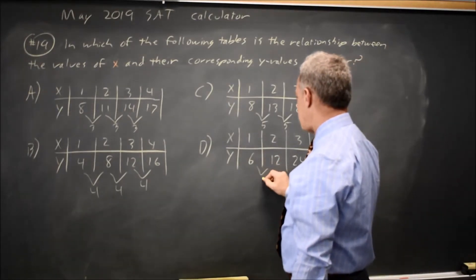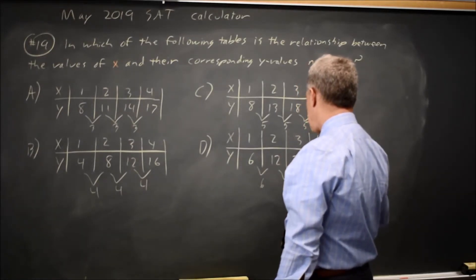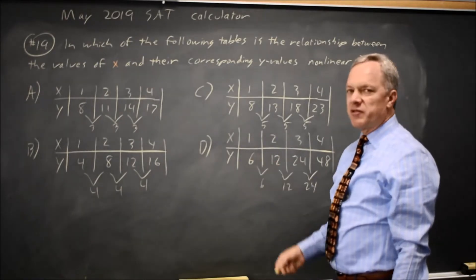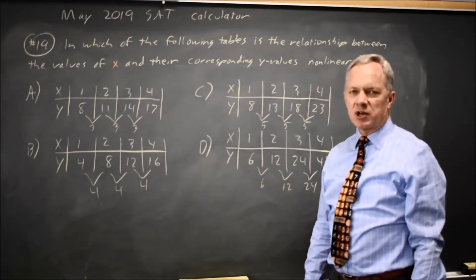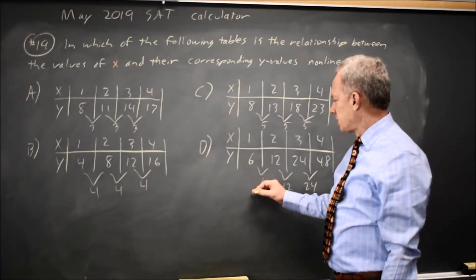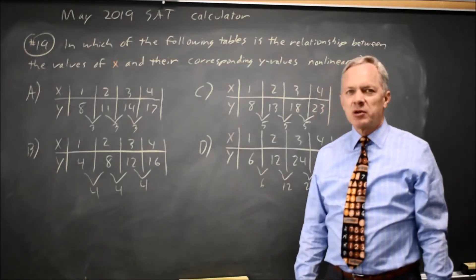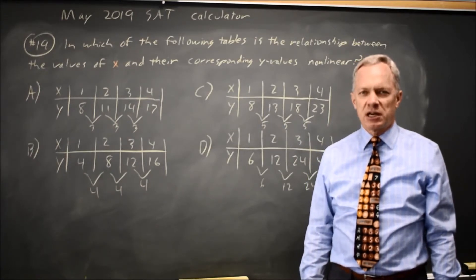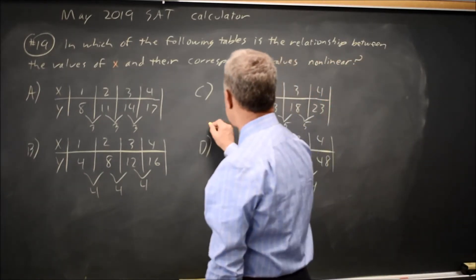Here, y goes up by 6, 12, 24, as x goes up by 1. Our y values are multiplied by a constant rather than adding a constant each time. If you multiply y by a constant, that's exponential, so if choice D is exponential and not linear, choice D would be the correct answer.